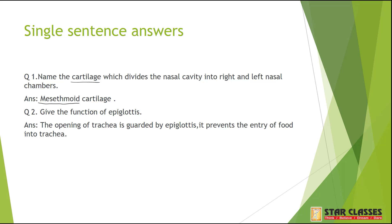Question 2: Give the function of epiglottis. The epiglottis is the flap that guards the opening of the trachea. Because of its guarding, when we eat food, it goes directly into the food pipe and not into the windpipe. So the epiglottis prevents food from entering the windpipe.